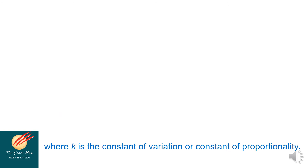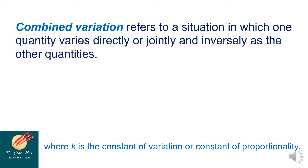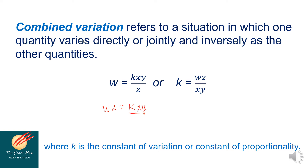A while ago we talked about joint variation, which involves the product of two or more quantities. However, combined variation refers to the situation in which one quantity varies directly or jointly and inversely as other quantities. For example, W is equal to K times X times Y all over Z. To find K, multiply both sides by Z, giving W times Z equals K times X times Y, then divide by XY, so K is equal to WZ all over XY. K is the constant of variation or constant of proportionality.